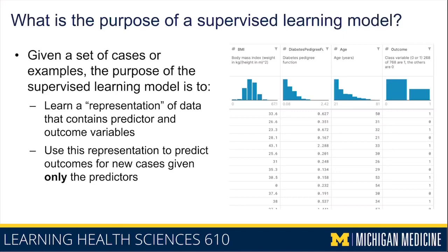So what is the purpose of a supervised learning model? The general idea is that given a set of cases or examples, the purpose is to learn a representation of data that contains predictors and outcome variables, and to use this representation to predict outcomes for new cases when given only the predictors. As an example, the Pima Indians data set has data on women that are Pima Indians and their risk for developing diabetes. There are several predictor variables, such as body mass index, family history — coded as a continuous variable known as the diabetes pedigree function — and a woman's age.